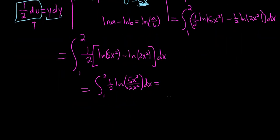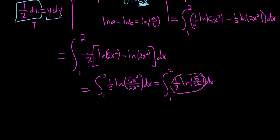This is equal to the definite integral from 1 to 2 of 1/2 ln(5/2) dx. The x squared terms cancel, leaving ln(5/2). Since 1/2 times ln(5/2) is a constant, when you integrate it you just get x, so it becomes 1/2 ln(5/2) times x, evaluated from 1 to 2.